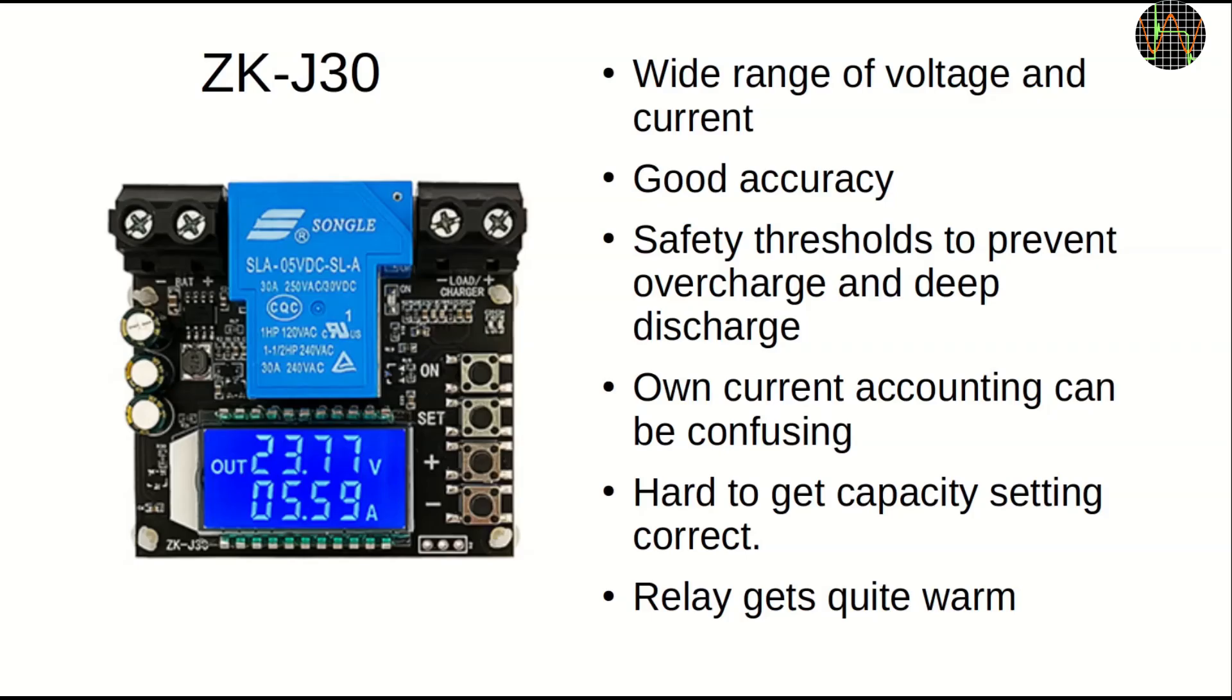I like that the ZKJ30 has such a wide current and voltage range making it suitable for many batteries 6V and above. It has good accuracy in its measurements and does not induce a voltage drop because of a shunt resistor. The availability to set safety thresholds is great, but do test them first to make sure they work. This is how I found the bug that the low voltage threshold was not working until a high threshold was set as well.